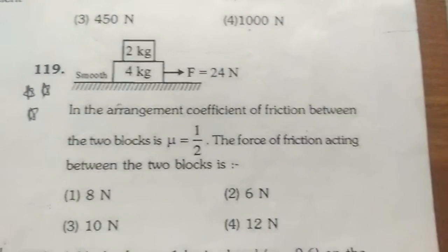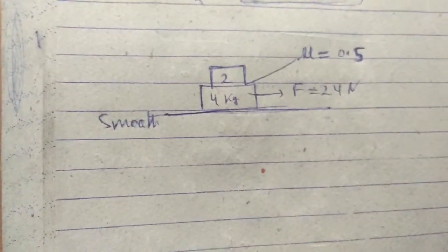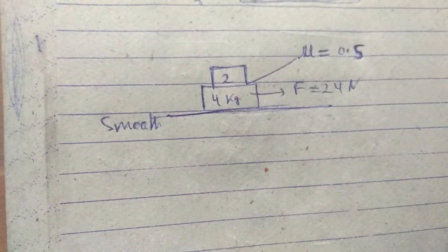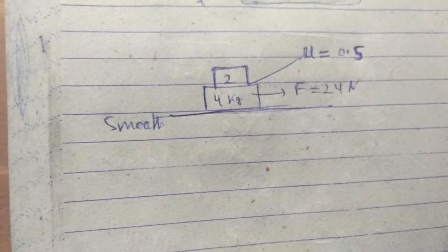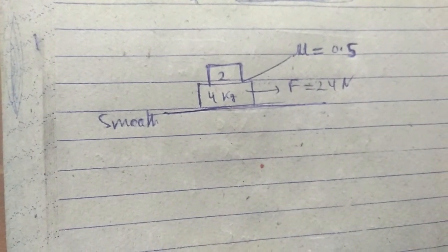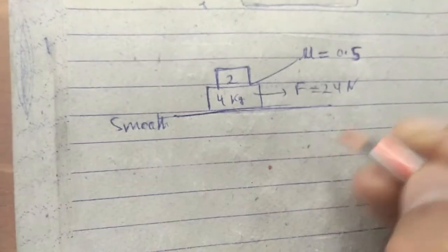So how we can solve this problem is - I have made this diagram here. Now the net external force is 24 N. You need to first find the acceleration, what acceleration can this force provide to the whole system.